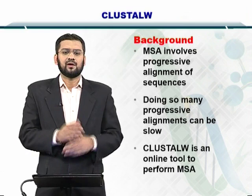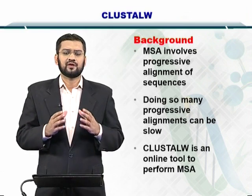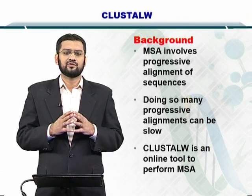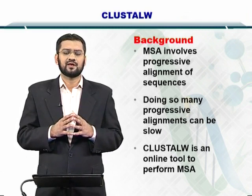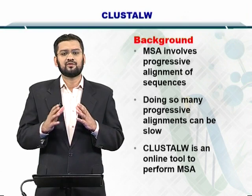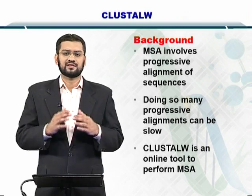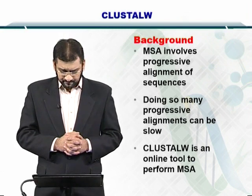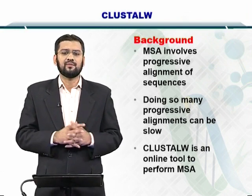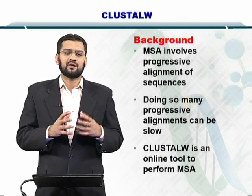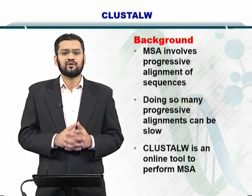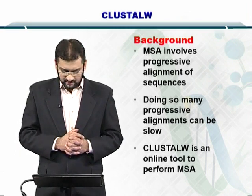Multiple sequence alignment involves alignment of sequences in such a way that you can extract the most similar sequences first, and then repeat this process for other sequences such that all the sequences end up in an alignment. The progressive alignments are used, and this entire process is essentially an iterative process, and therefore we call it the progressive alignment.